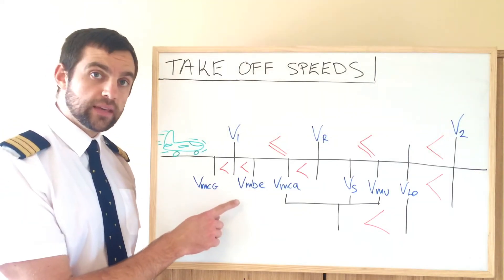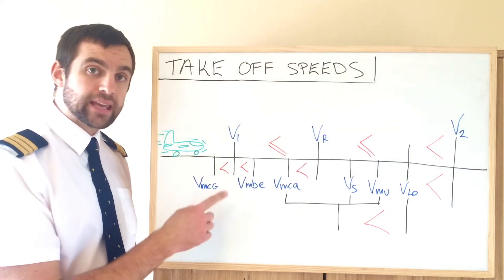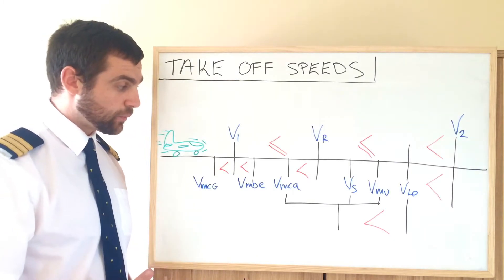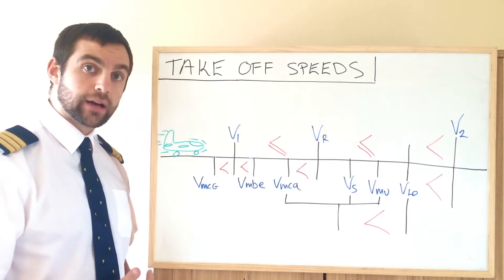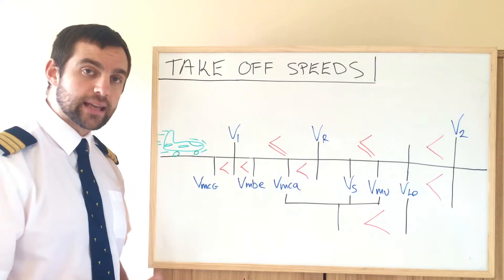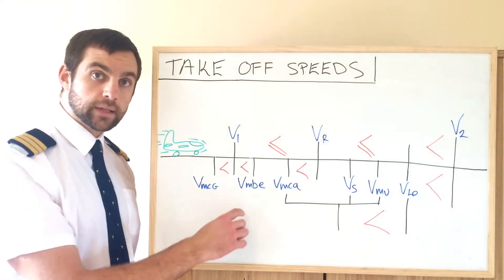Next would be VMBE — maximum brake energy speed. It's the speed at which an aircraft can initiate a rejected takeoff and stay within limits, within temperature limits for the brakes.